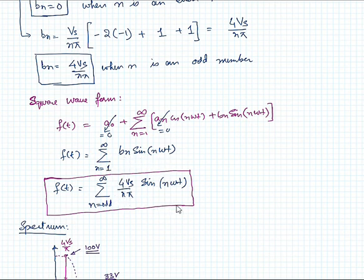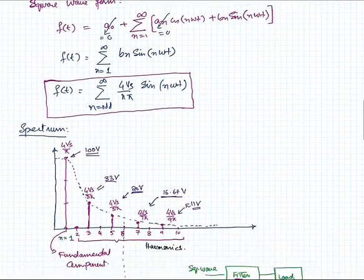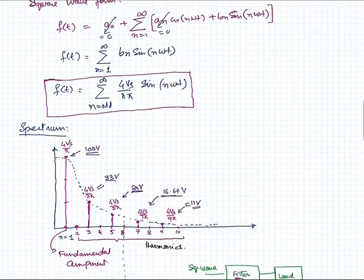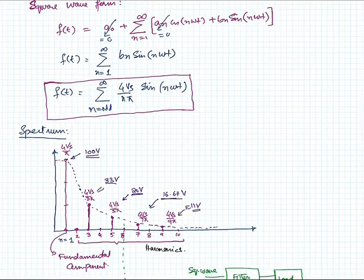Now let us get the spectrum of this one. Spectrum is basically the plot of your harmonic magnitude with respect to the harmonic order. Harmonic is the multiple of your fundamental frequency. The first harmonic is the fundamental component and that is 4Vs by π from this one.